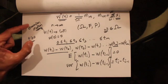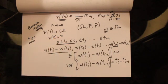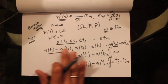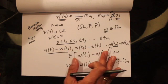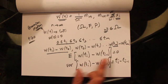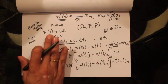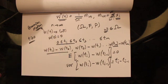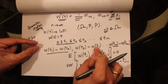So for W(t) to be a Brownian motion, we want W(t) to depend on the outcome of a random experiment, we want the non-overlapping increments to be independent of one another and normally distributed with mean 0 and variance equal to the length of the time step. If these conditions hold, then W(t) is called a Brownian motion.